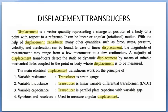The first detailed type is the displacement transducer. Displacement refers to something being shifted or displaced — it is a vector quantity having both direction and motion. It represents a change in position of a body or point with respect to a reference, and can be a linear or angular motion. Using displacement transducers, many other quantities like force, stress, pressure, velocity, and acceleration can also be found.